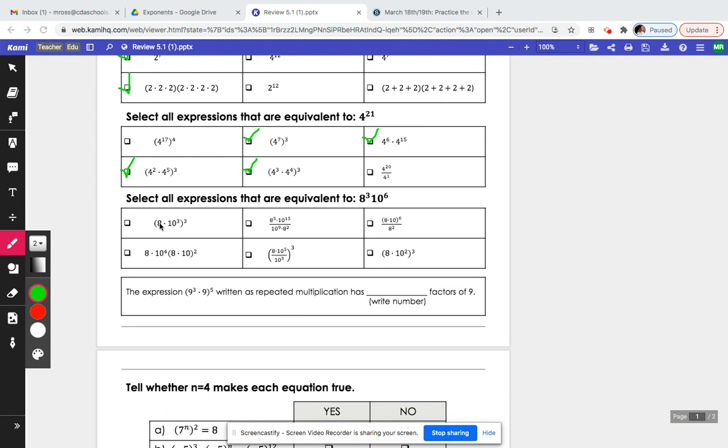So this first one, we would be doing the power of power, which means we're multiplying our exponents. Our 8 would end up being 8 to the third, because 1 times 3 is 8 to the third. However, 10 to the third times 3 would actually be 10 to the ninth, so this is incorrect.